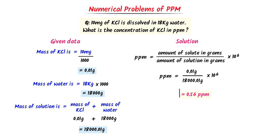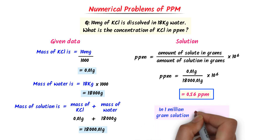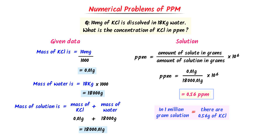0.56 ppm of potassium chloride means that there are 0.56 grams of potassium chloride present in 1 million grams of a solution. Hence note down this important numerical problem.